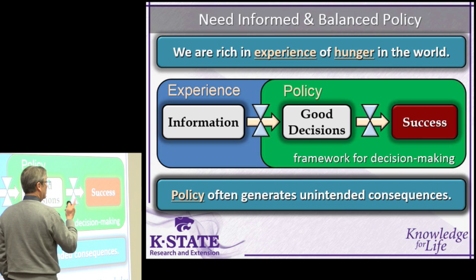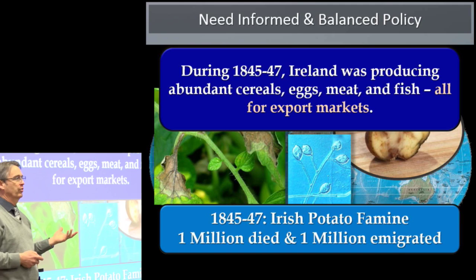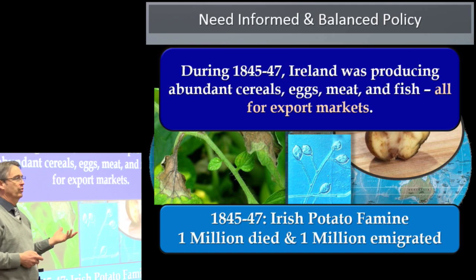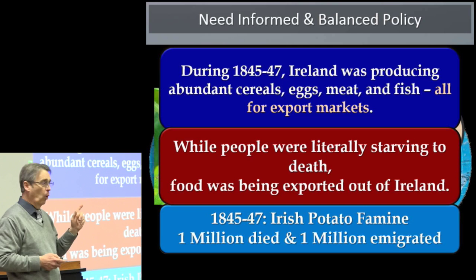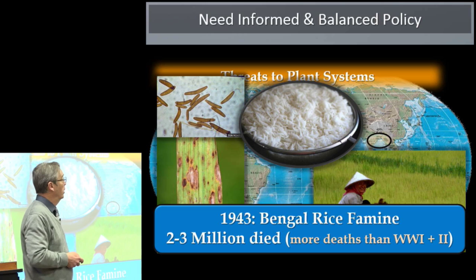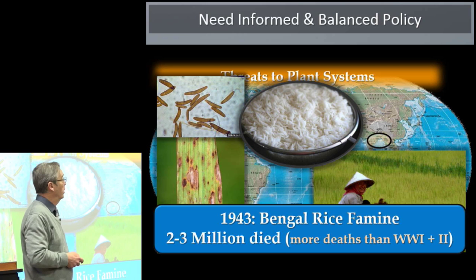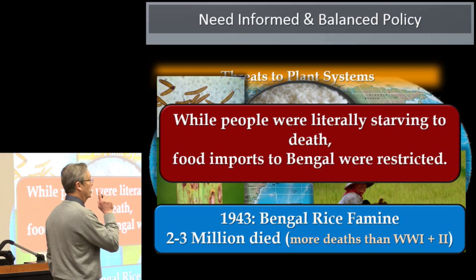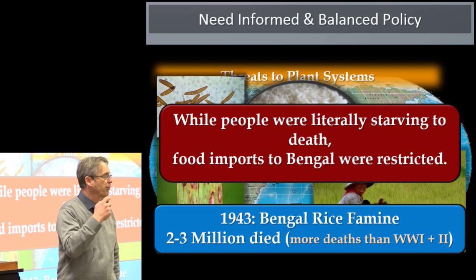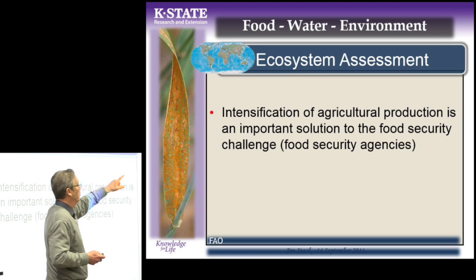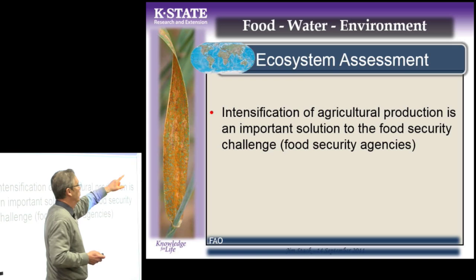Policy often generates unintended consequences. During the Irish potato famine, while people were literally starving to death in the field, Ireland was food self-sufficient — producing lots of cereals, eggs, meat and fish, but all for export. During the Bengal rice famine, while people were literally starving to death in the streets, food imports to Bengal were restricted because they were afraid it would fall into the enemy's hands. Policy matters. Intensification of agricultural production is an important solution to the food security challenge, yet intensified agricultural production systems are also the single biggest threat to the environment, according to the ecological community.